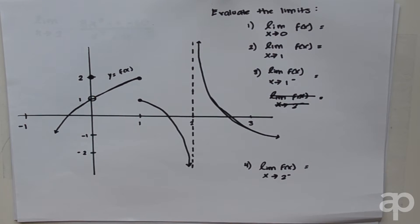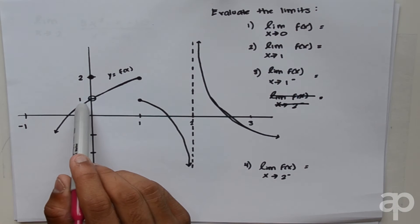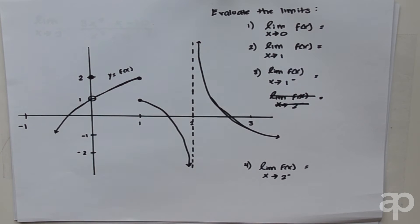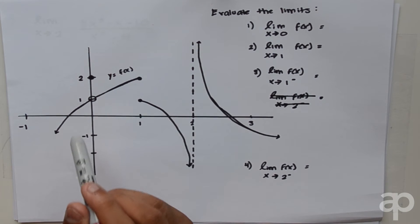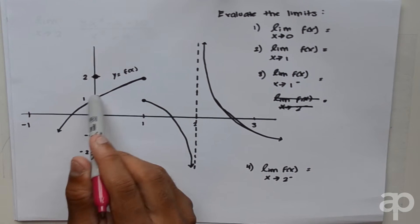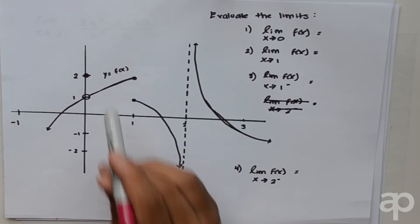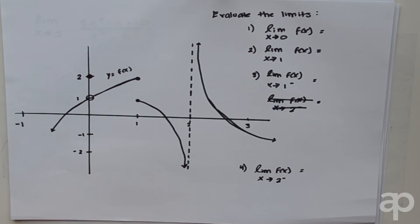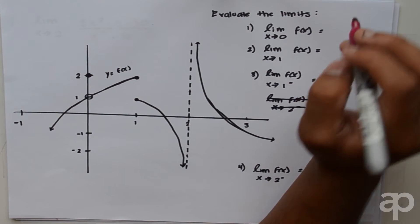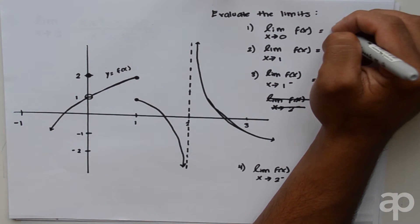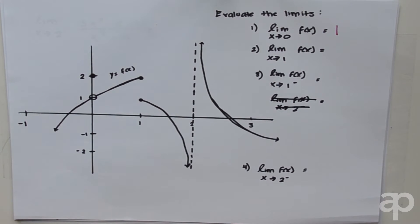The first question asks us to evaluate the limit of f of x as x approaches 0. Approaching the x-coordinate 0 from the right yields a y-coordinate of 1, and from the left as we approach x equals 0, the y-coordinate also equals 1. Since the right limit and the left limit both equal 1, the limit of f of x as x approaches 0 equals 1.